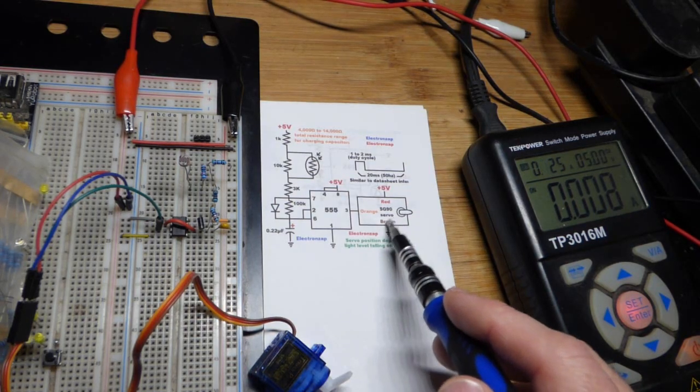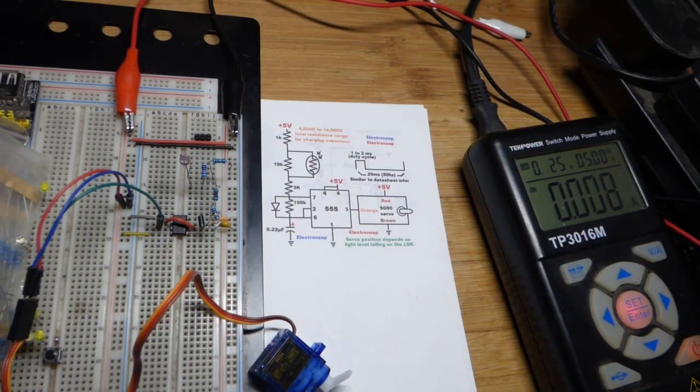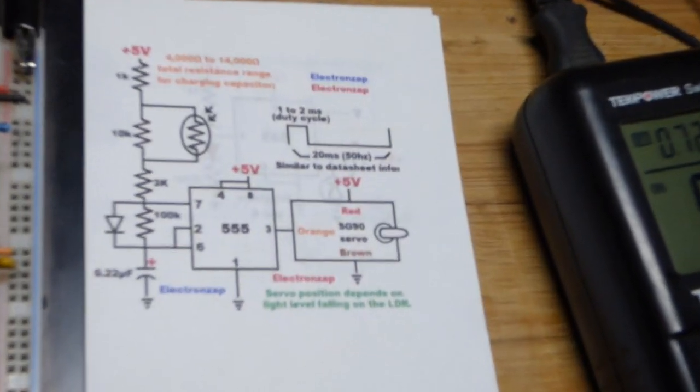So now here's the schematic diagram for setting the servo position with the 555 timer and a light dependent resistor.